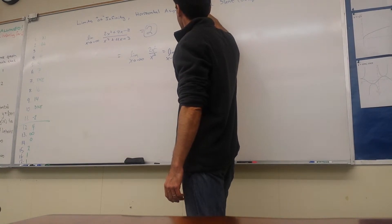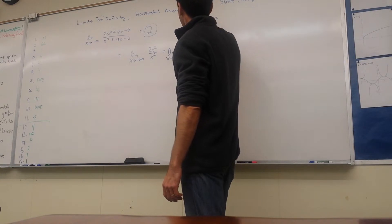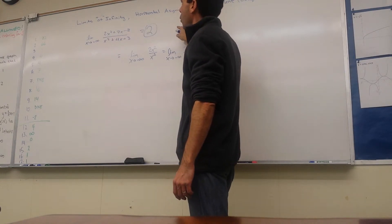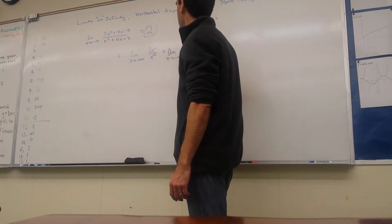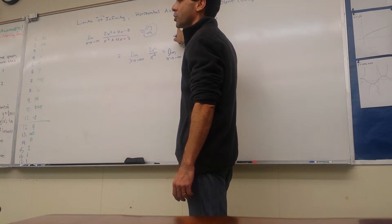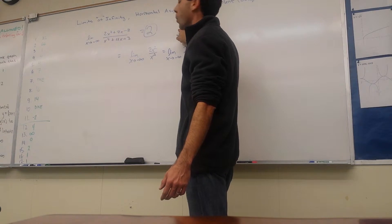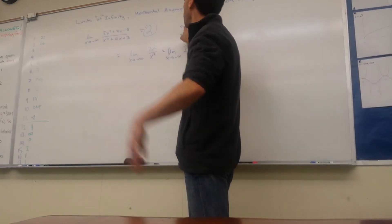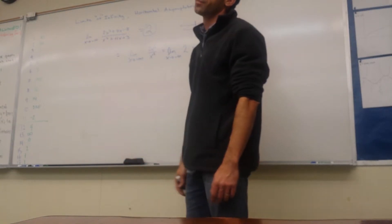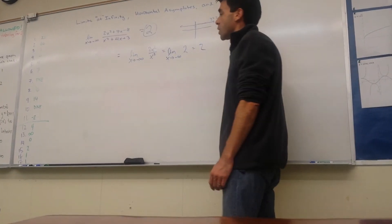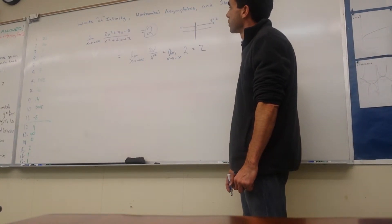This problem is now no harder than number 1 on the worksheet. Imagine the graph of y = 2. What happens to the y coordinate as you go indefinitely to the left? The y values are getting closer to 2. So the answer to this problem is simply 2.